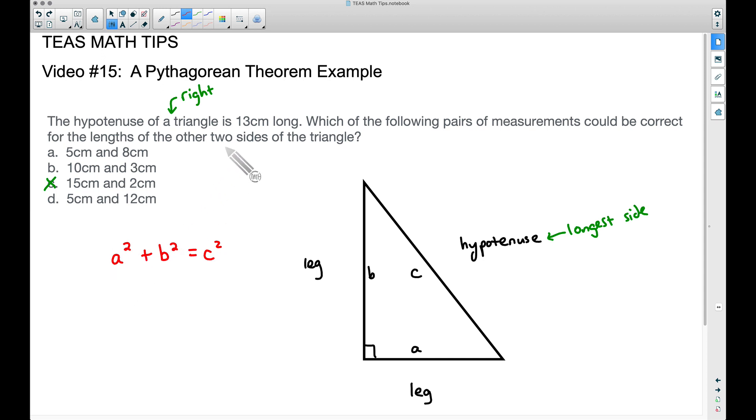So, the A and the B, that's the other two sides, and then the C is our hypotenuse. So, we know that C, our hypotenuse, is 13 centimeters. So, we're going to take 13 and we're going to square it. And I'm going to go ahead and say that's 169. 13 times 13 is 169.